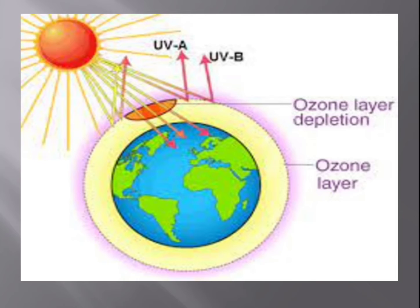These chemicals are found in sprays and cooling appliances like refrigerators and air conditioners. When people understood that because of chlorofluorocarbons the depletion of the ozone layer is happening, they started restricting these chemicals globally — around all the countries, they started reducing the usage of chlorofluorocarbons so that we can prevent the depletion of the ozone layer.